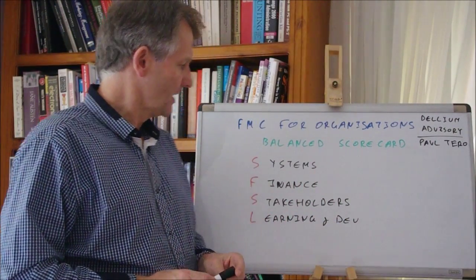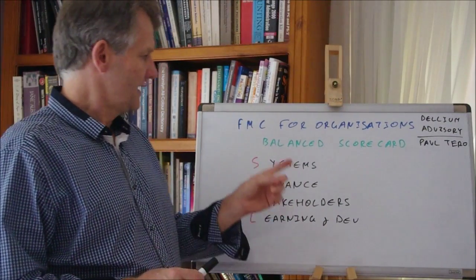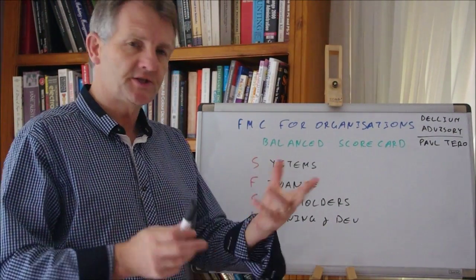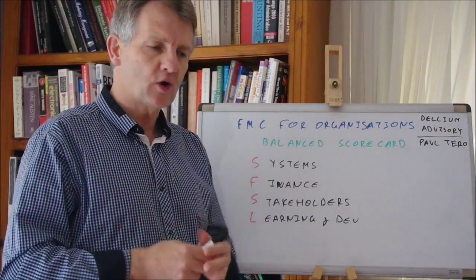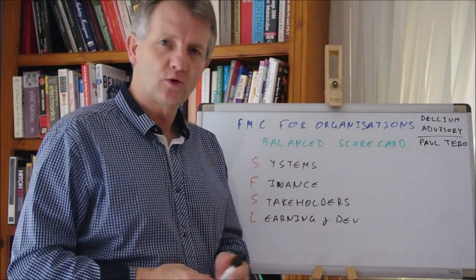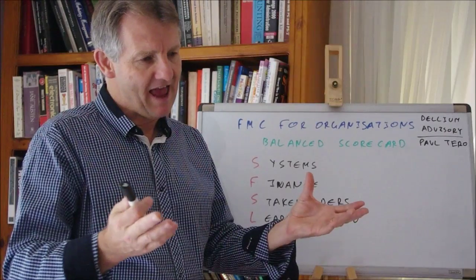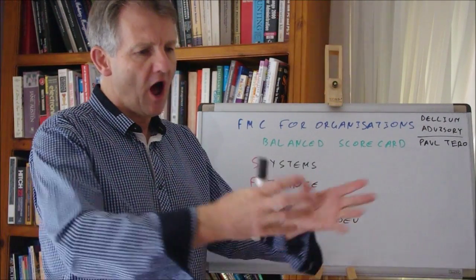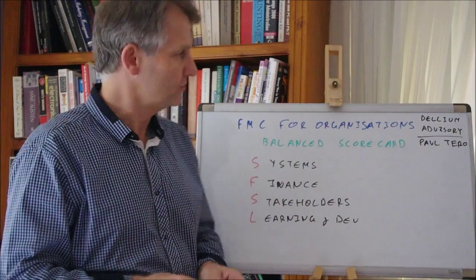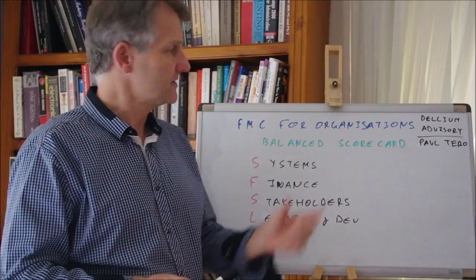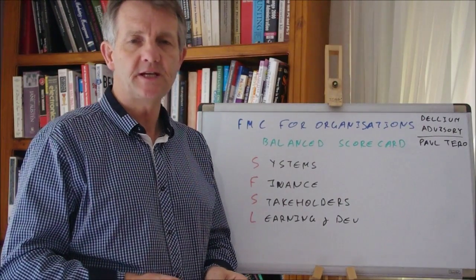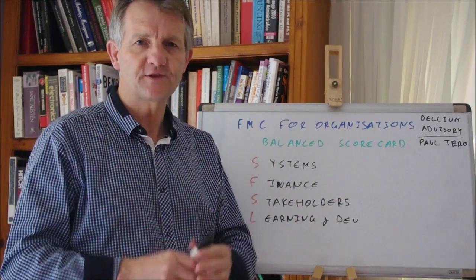So there we have it. SFSL: systems, finance, stakeholders, and the final one learning and development. The Balanced Scorecard, a way of looking at your organization and finding out how well it is performing, a holistic view on its performance. This has been Paul Terrow of Delium Advisory with another FMC for Organizations. Thanks for listening.